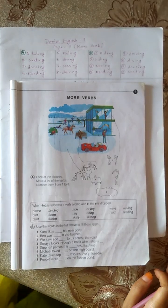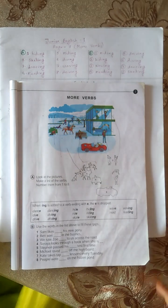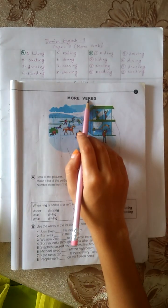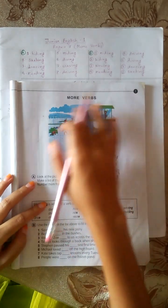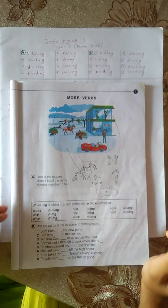Assalamu alaikum. Today we learn Junior English 1, page 7. More verbs. We are given some pictures.